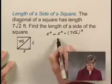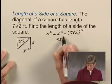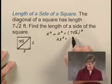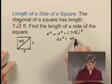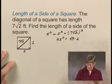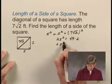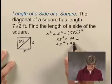And on the left-hand side, we have 2S squared. And over here, when we square this, we get 7 squared, which is 49, times the square root of 2 squared, which is 2. So we have 2S squared is equal to 98.